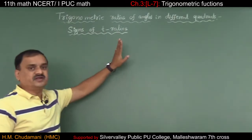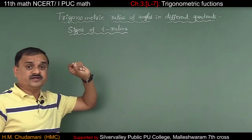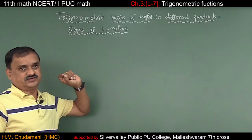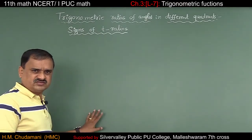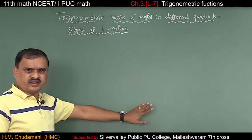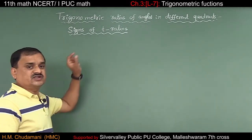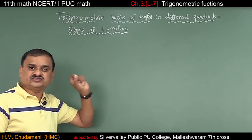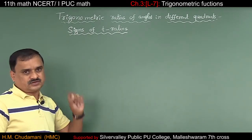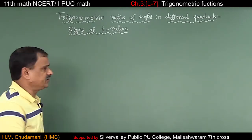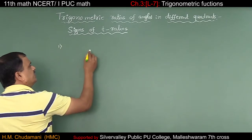Trigonometric ratios of angles in different quadrants — that is, the signs of trigonometric ratios. First quadrant, second quadrant, third quadrant, and the fourth quadrant. Let us see one by one.